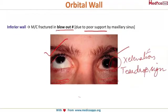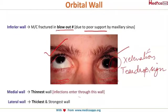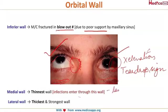The medial wall is the thinnest wall, making it more prone to infection. The ethmoidal sinus is located adjacent to the medial wall, and the wall that separates the medial orbital wall from the ethmoidal sinus is the lamina papyracea. As the name suggests, it is as thin as paper, so it easily allows infections to pass through from the ethmoidal sinus into the orbit.